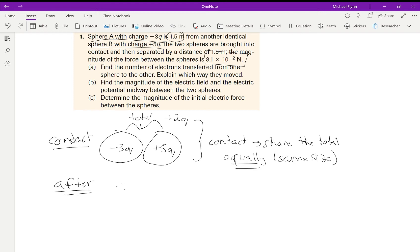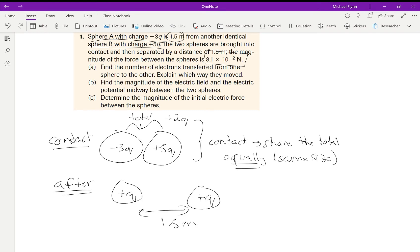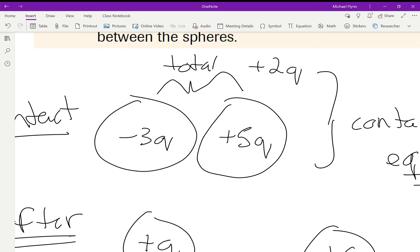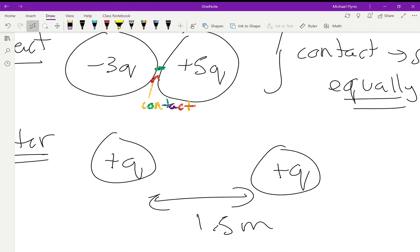So this is while they come into contact. And then afterwards I'll draw the two spheres again. Afterwards it's going to look like this: they're each going to have the charge of q here, and I'll separate them by 1.5 meters. Here they were not separated—they were in contact instead.